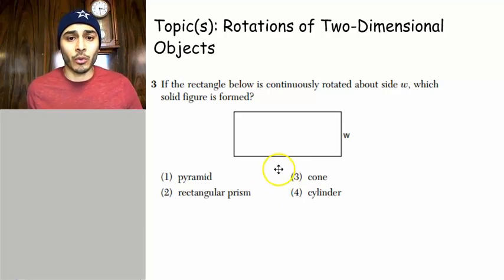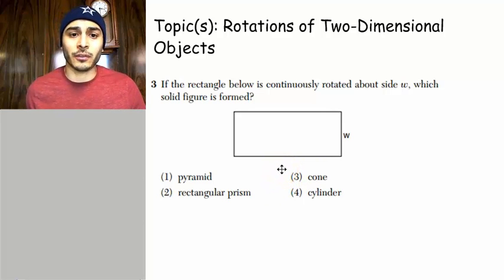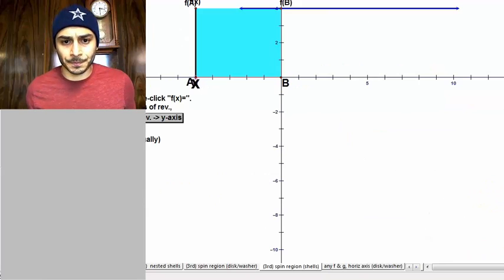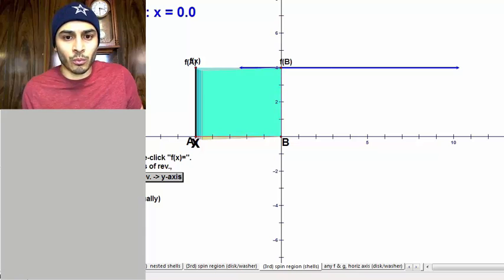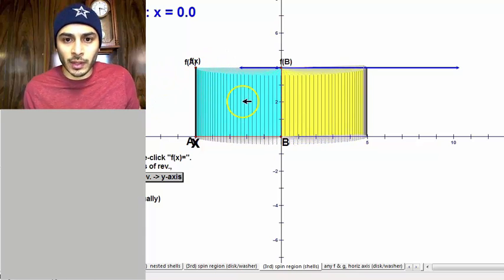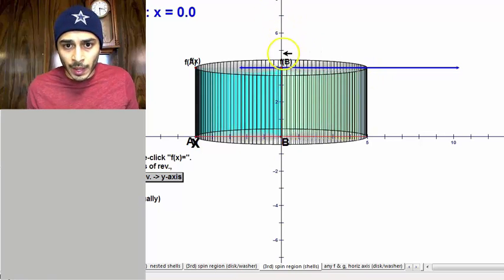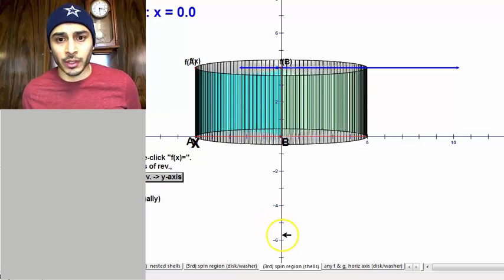Number three. The topic here is rotations of two-dimensional objects to produce a three-dimensional object, to produce a solid. In order to illustrate this, I have this animation here. I'm going to go ahead and revolve it now. You can see that it's revolving around that axis of revolution. We call that axis of revolution in calculus.